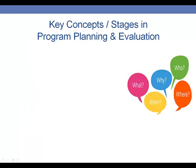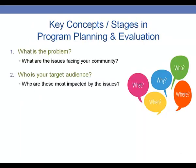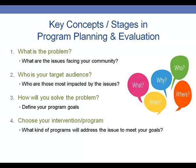Some key concepts for stages in program planning and evaluation. Typically, we start by asking the basic question of what is the problem and what are the issues facing your community, as well as who your target audience is going to be. The way to determine your target audience is by thinking about those most impacted by the issues you're targeting. You'll then move on to asking how you're going to solve this problem — define the program goals you want to target and choose an intervention or program that can help you do that. Ask yourself what kinds of programs will address the issue to best meet your goals, and whether another program already exists that might give you a starting point from which you can adapt. You can see the teen traffic safety program database along with your resource materials to look at other programs that might tackle similar issues.